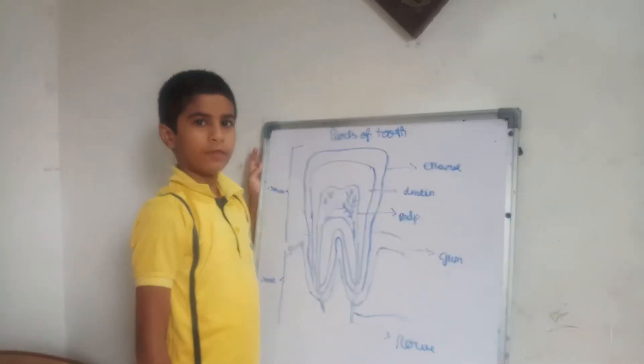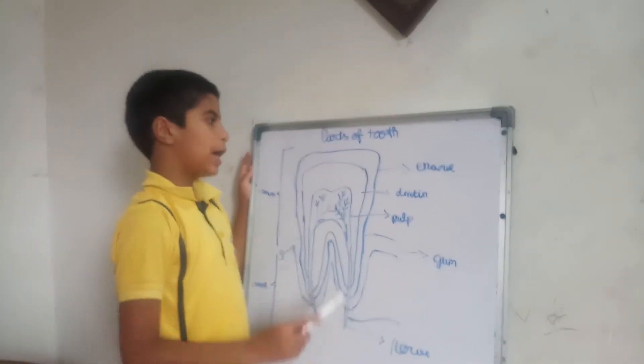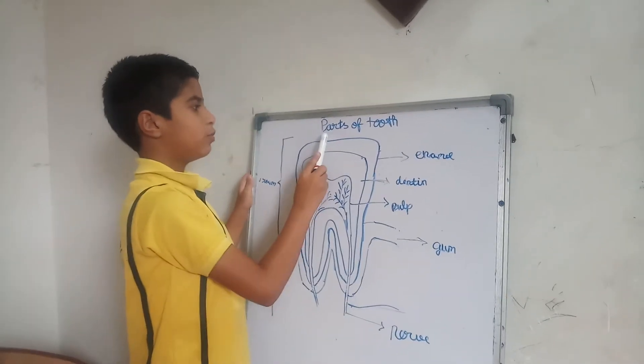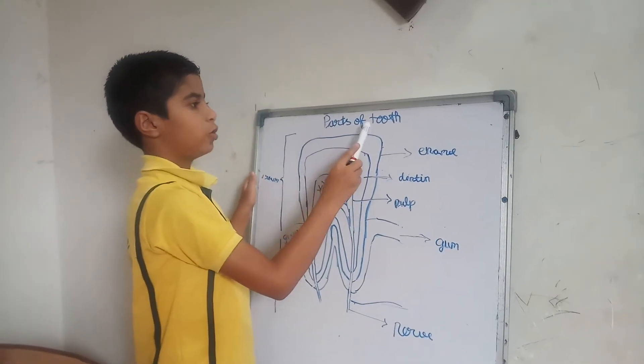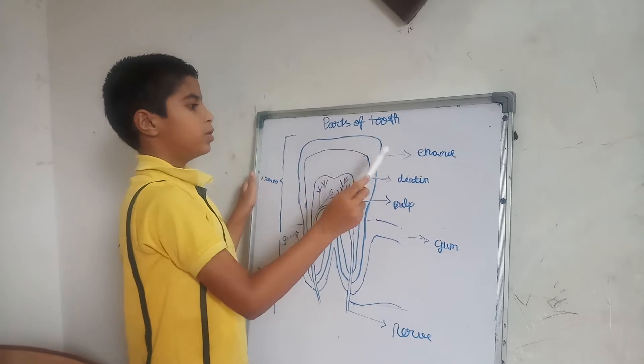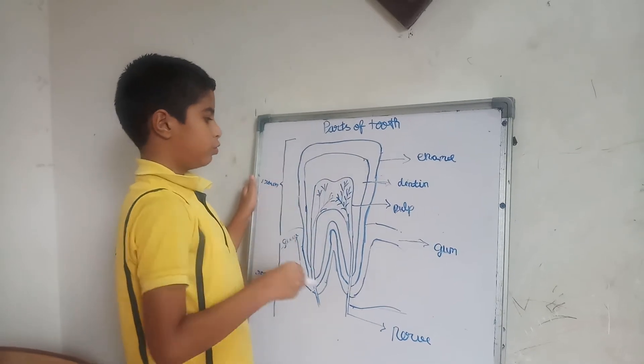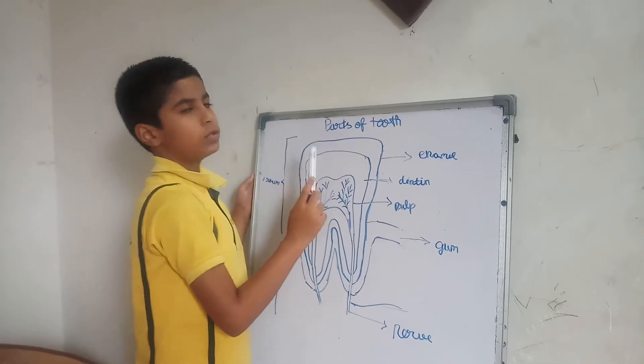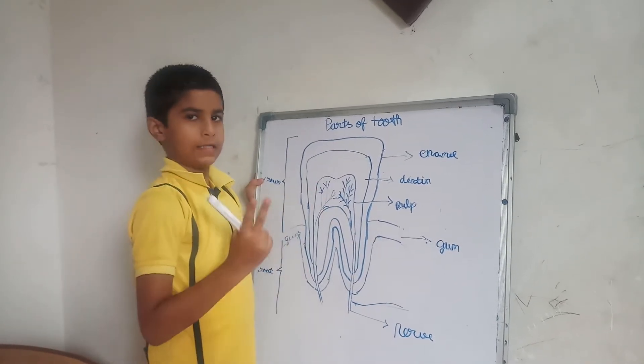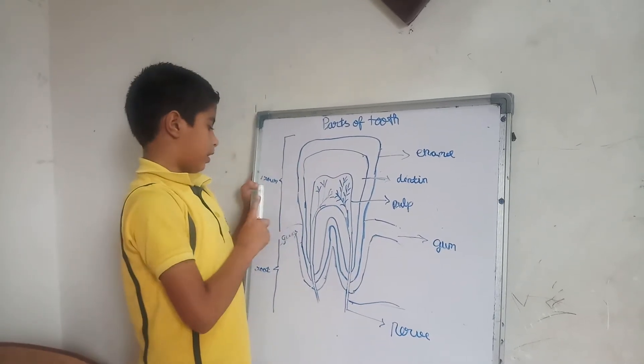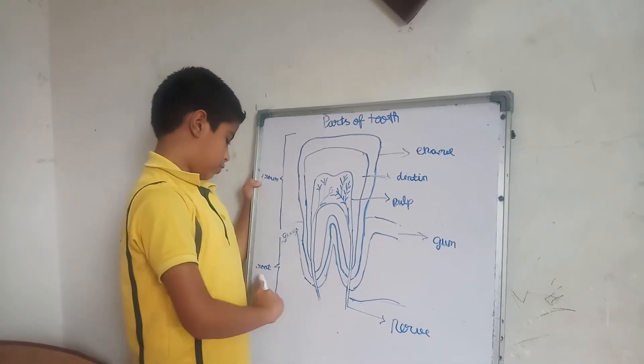Hello everyone, today I am explaining you the parts of the tooth. This is the tooth. The tooth has two parts: crown and root.